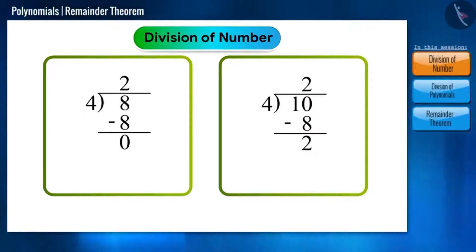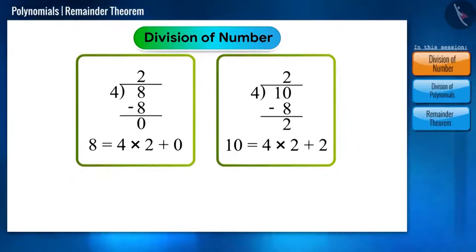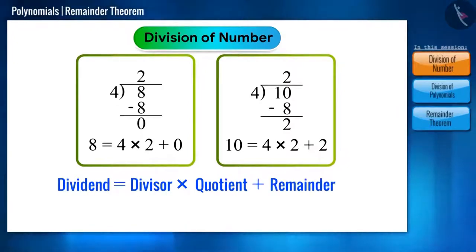We can also represent this process as 8 is equal to 4 multiplied by 2 plus 0, and 10 is equal to 4 multiplied by 2 plus 2. And we can say, dividend is equal to divisor multiplied by quotient plus remainder.